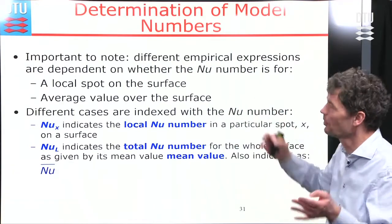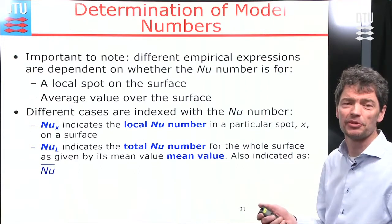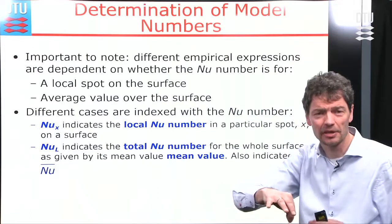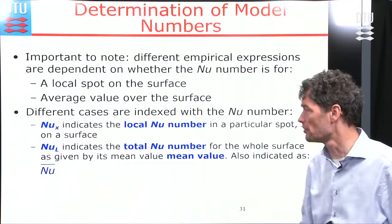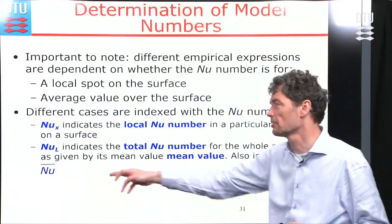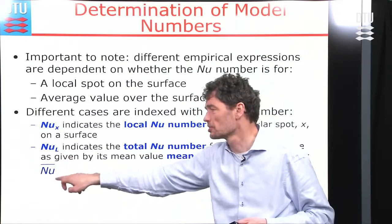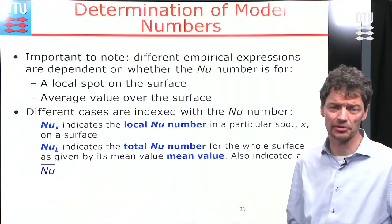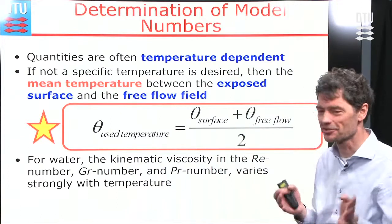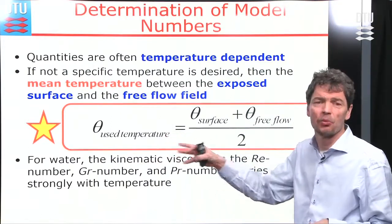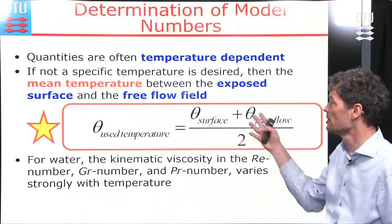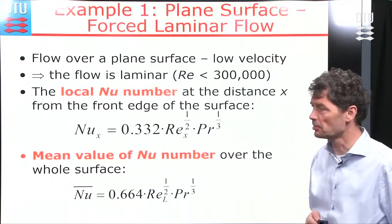It is important to note whether we are finding the Nusselt number at a local spot (Nu_x, at position x) or as an average over the whole surface (indicated by a line over the Nusselt number or using the total plate length). For temperature-dependent fluid properties, if no other information is given, you should use the average of the surface temperature and the free-flow fluid temperature.